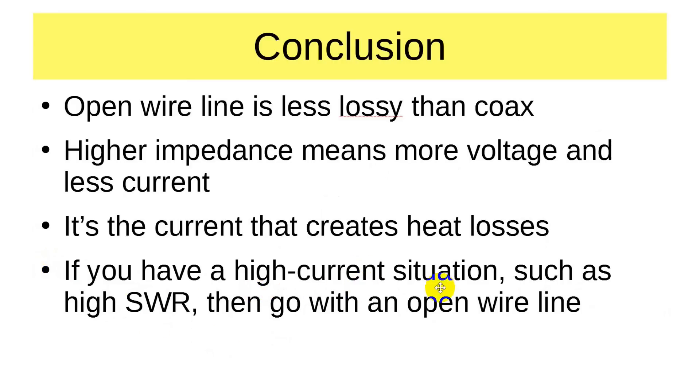If you have a high current situation, such as a high SWR, for example, you have a doublet. A doublet, by the way, is like a dipole, except it's not resonant. It doesn't have lengths that are resonant. So you can use ladder line to feed it and a tuner to take care of the non-resonance and make everything copacetic. It used to be, back before World War II, everybody used open wire line. Because coax had not made its way into popular consciousness by then. It took World War II to do that.